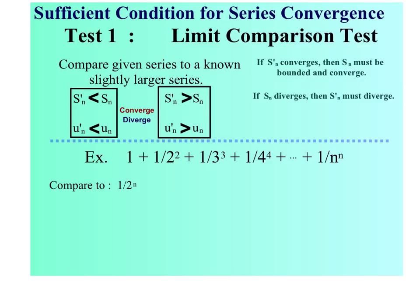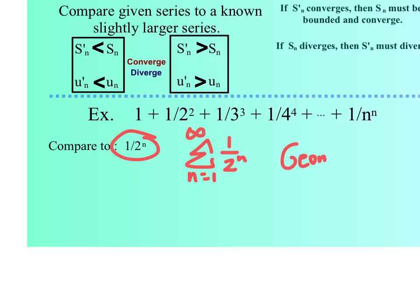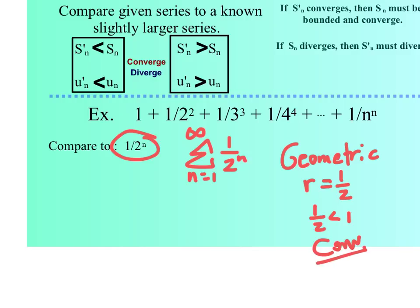There are actually two branches of the comparison test. The first one you'll probably rarely use, and the second one you will love — I'll get to that one in the next slide. Basically what we're going to do is compare series to a known series, kind of like we've done before. For example, the series from n equals 1 to infinity of 1 over 2 to the n is convergent because it is a geometric series with r equal to 1/2, and since 1/2 is less than 1, it converges.